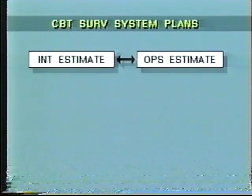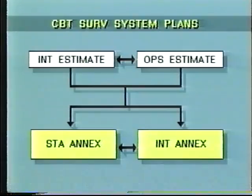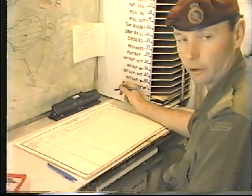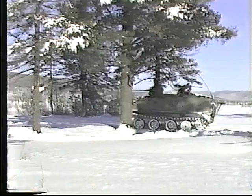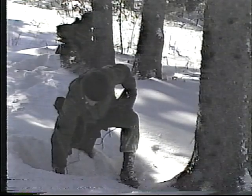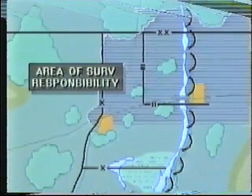Planning for the combat surveillance system originates from estimates produced by the intelligence and operations staffs. These estimates eventually evolve into the surveillance and target acquisition annex and the intelligence annex to the formation operations order. The surveillance and target acquisition plan is developed in concert with the needs of the intelligence collection plan. It covers the employment of patrols, ground and air observation posts, listening posts, weapon locating radars, remotely piloted vehicles, electronic warfare intercept and direction finding devices, ground sensor systems, night illumination devices, and a variety of other systems and equipments which operate throughout the entire core area. It also details the emission control policy and the area of surveillance responsibility for the subordinate formations and units.